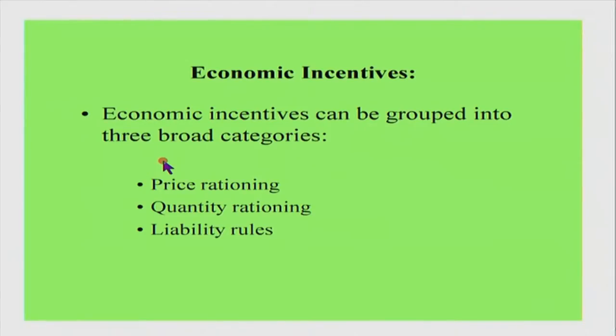There are three kinds of incentives broadly used by many countries: price rationing, quantity rationing, and liability rules. Price rationing increases the cost of shirking by setting a charge, tax, or subsidy on producer behavior or products. Quantity rationing regulates how much quantity is allowed. Liability rules define socially acceptable benchmarks of behavior with financial consequences for violations.